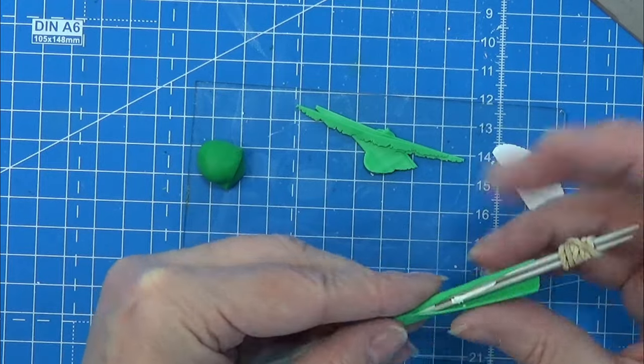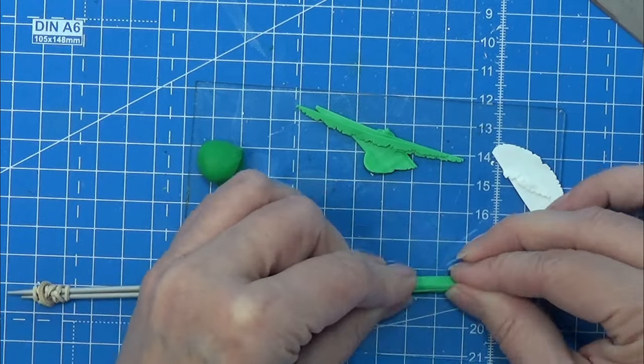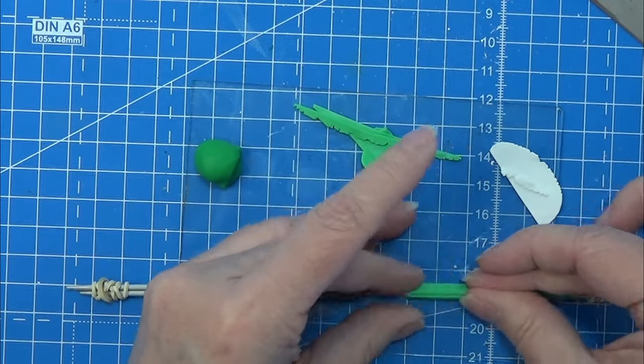So I'm just cutting off the excess here and making sure that it is nice and secure all the way around the knitting needles.